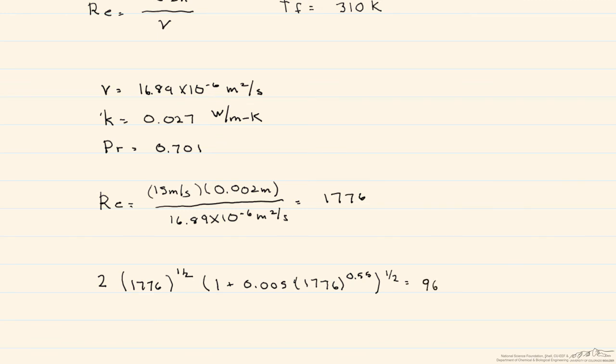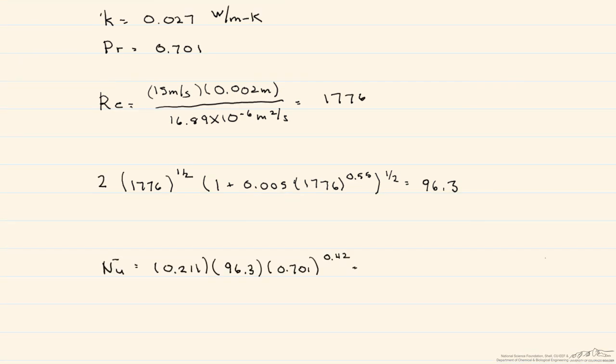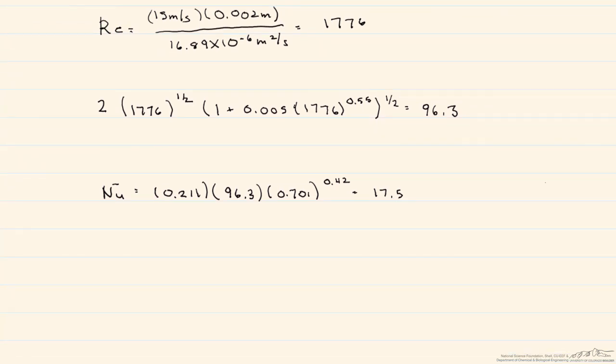Now let's put it all together to find our Nusselt number. We need the Prandtl number and thermal conductivity of the fluid. When we calculate this out, we end up with a Nusselt number of 17.5. Next, we turn that into our heat transfer coefficient, which is 236.7.